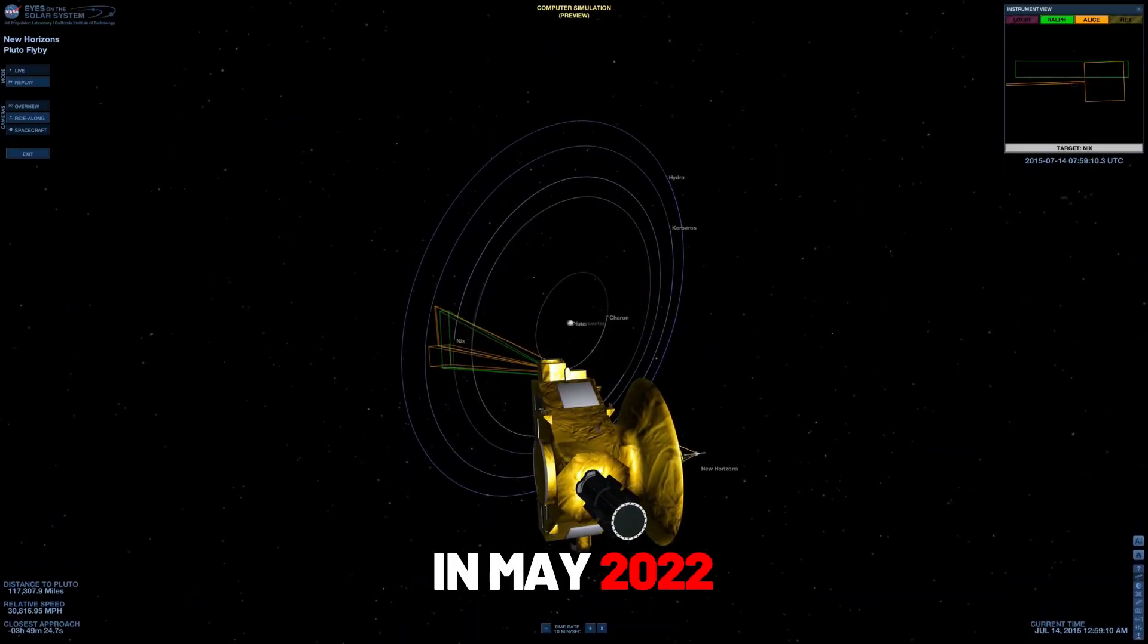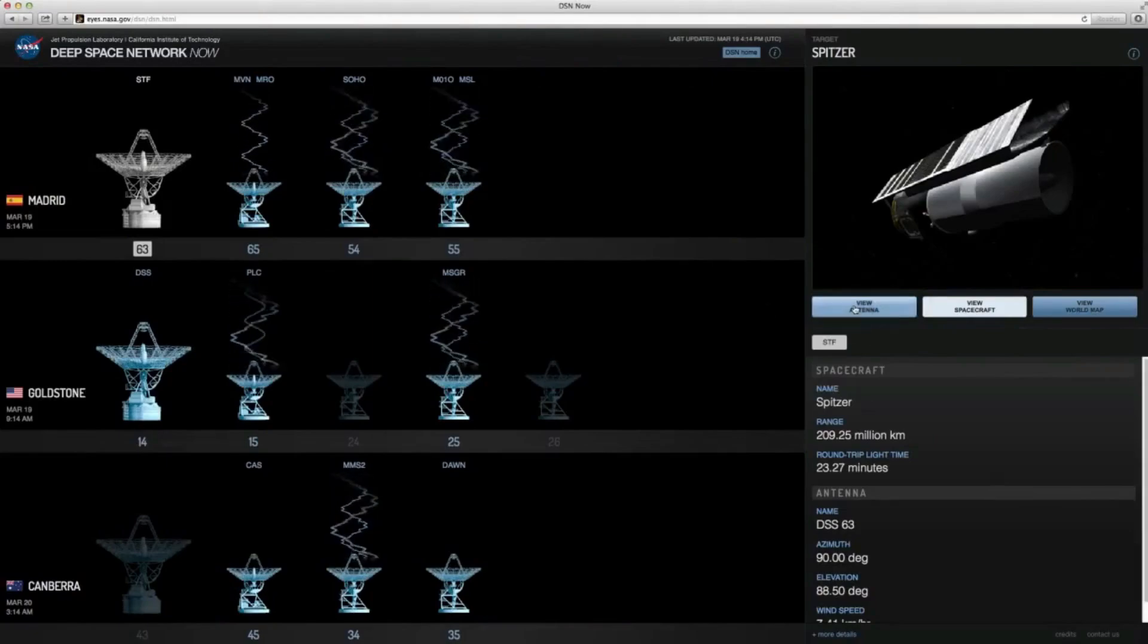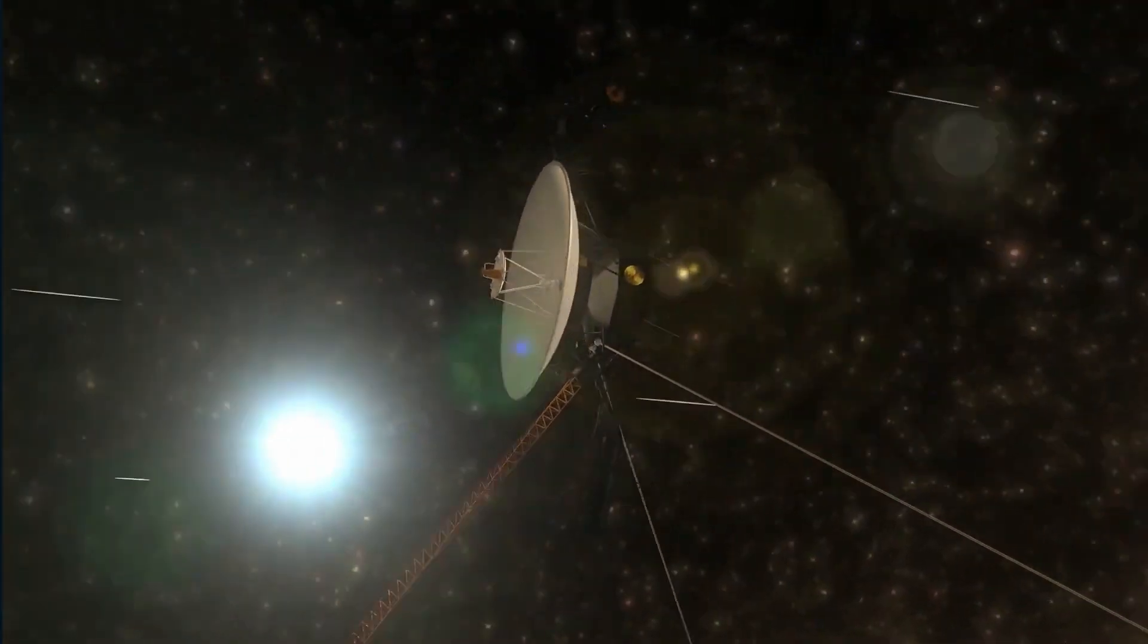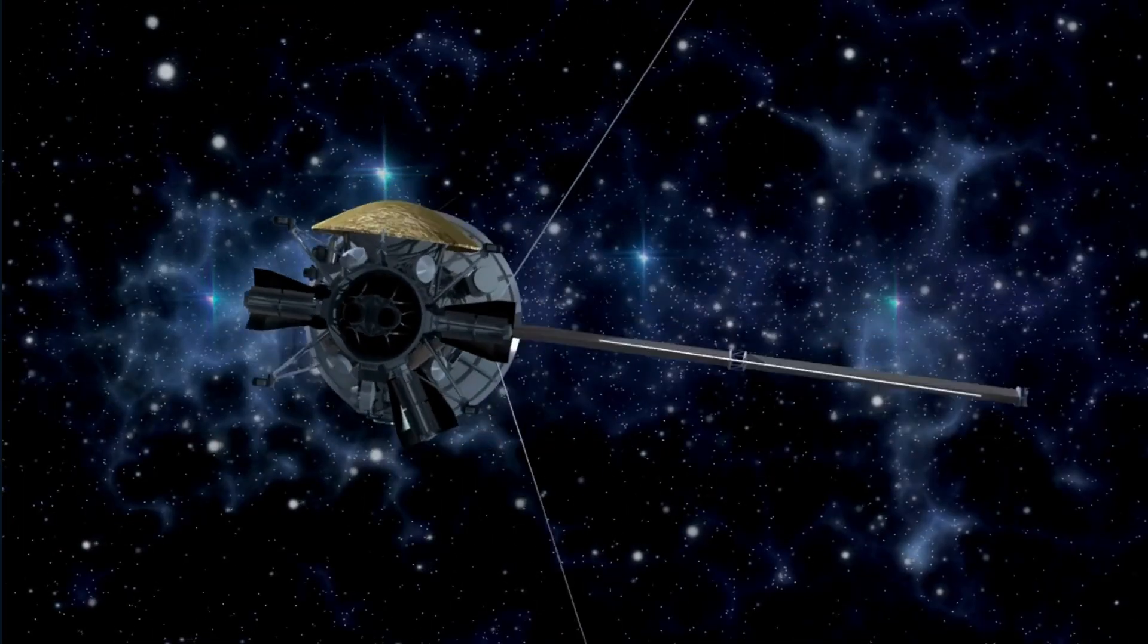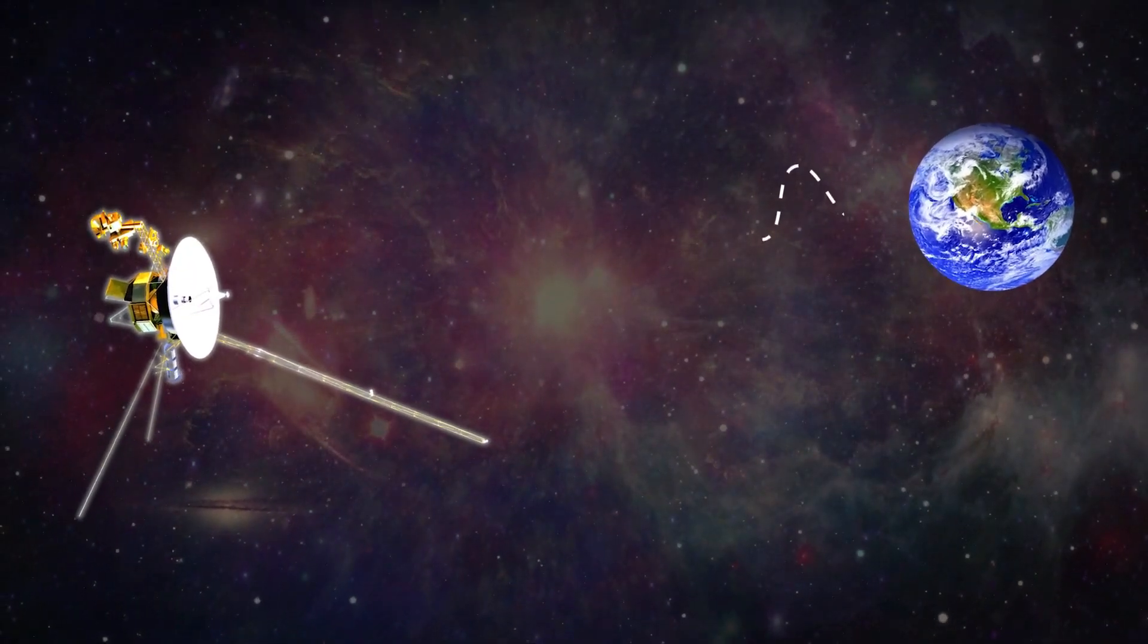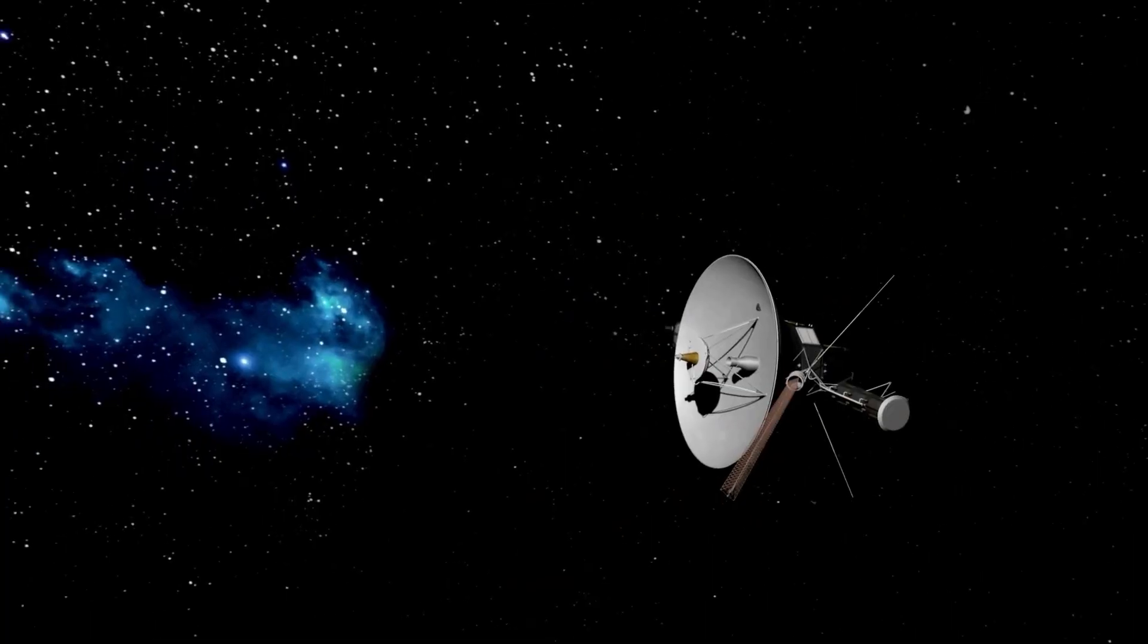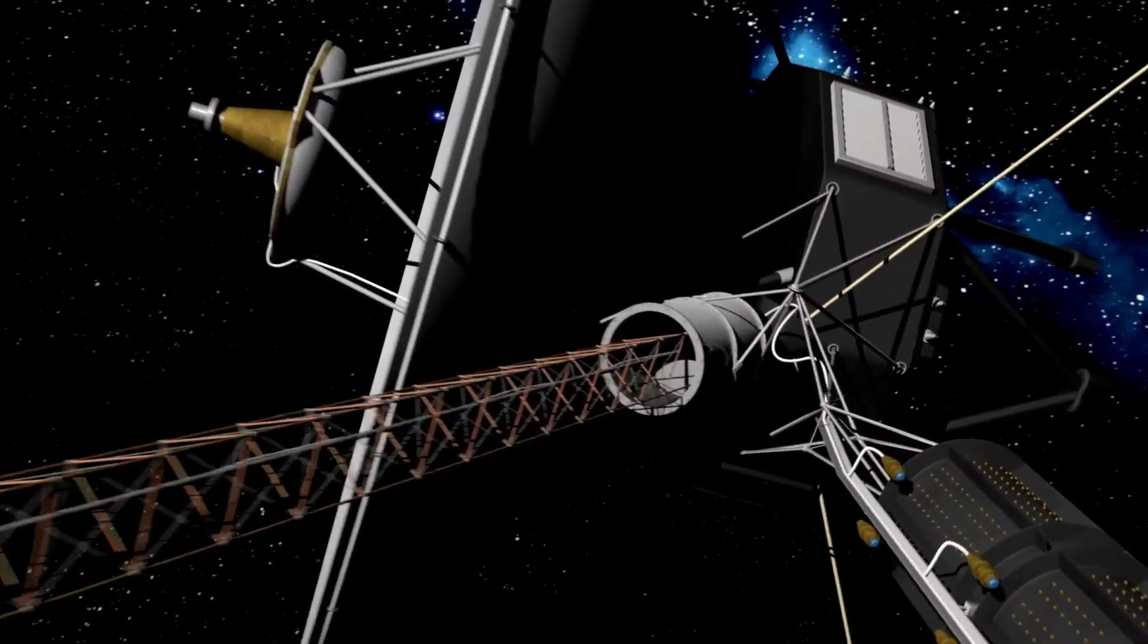In May 2022, that whisper faltered. Out of nowhere, Voyager 1 began sending back nonsense telemetry from its orientation system. According to the data, the spacecraft was spinning, tumbling, confused about its position. It claimed it was upside down, but something didn't add up. The antenna was still perfectly pointed at Earth. The signal was still strong, the scientific instruments, still working flawlessly. It was as if Voyager was dreaming, murmuring gibberish in its sleep, even while its eyes stayed open.